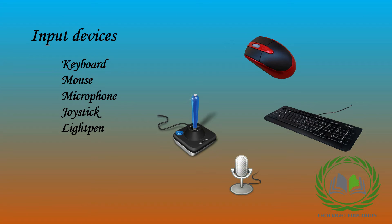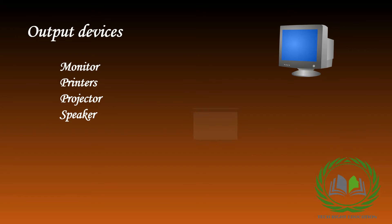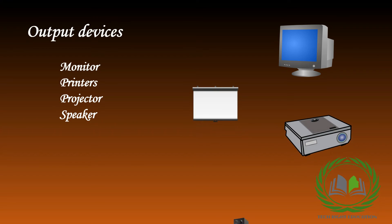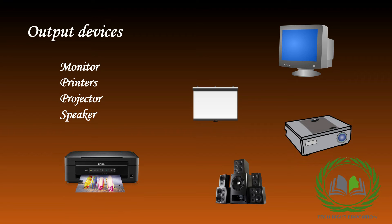Now, let's move to the output devices. Output devices are those which are used to take output or result from the computer after processing. Examples include monitor, printers, projectors, and speakers. The monitor displays the result on its screen, which we read. Projectors, printers, and speakers — these all are examples of output devices.